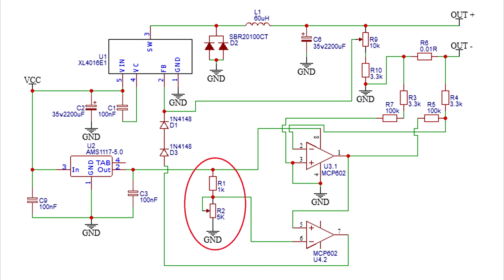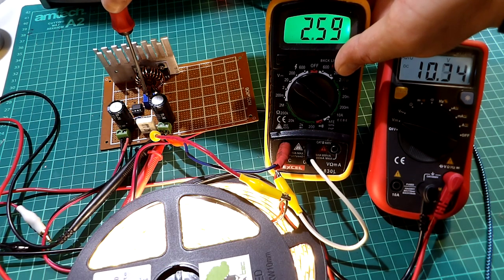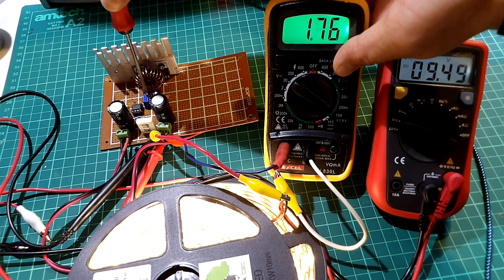The R1 and R2 from the MCP602 are forming a simple voltage divider. By turning the R2 we can offset the output of the second comparator, and so we can adjust the current limit.